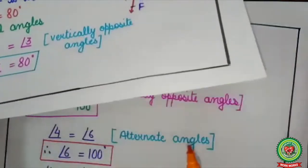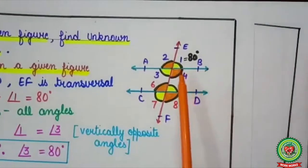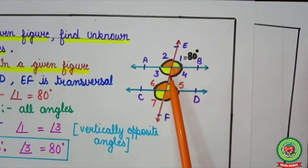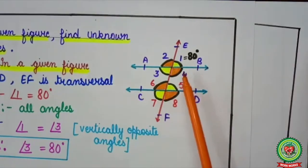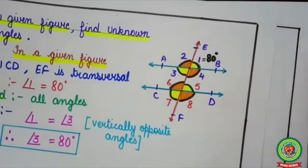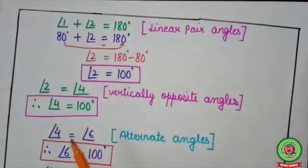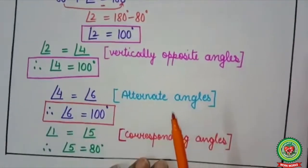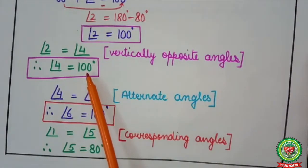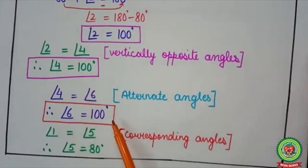Angle 4 and angle 6 are forming a Z shape, so angle 4 and angle 6 are alternate angles. Alternate angles are equal. Therefore, angle 4 equals angle 6. Reason: alternate angles. If angle 4 is 100 degrees, therefore angle 6 also equals 100 degrees.